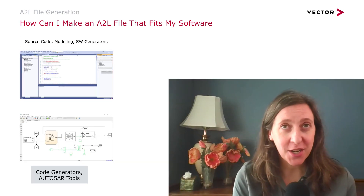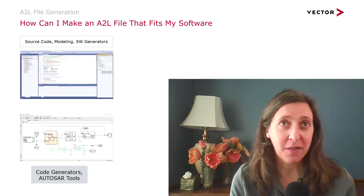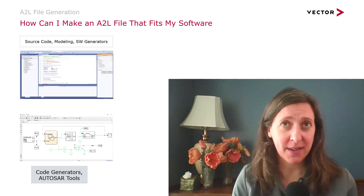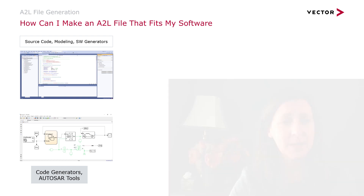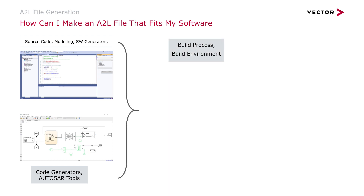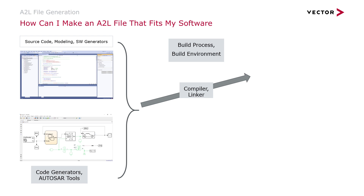How do you generate an A2L file and how does it fit into your embedded software development? We start with source code, either handwritten or from code generators or from models. The code is then compiled, linked, and turned into an executable that is flashed into the ECU.